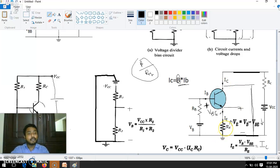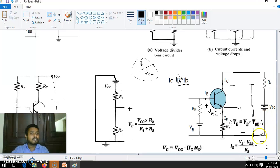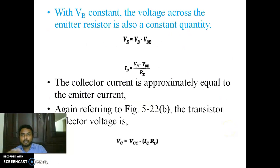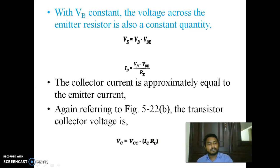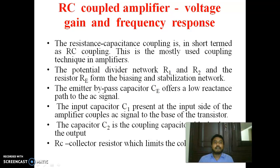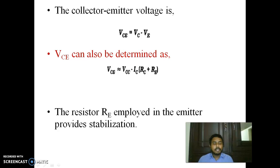So you understand the importance of RE as well — to stabilize this transistor bias, we are using RE, giving a negative feedback to the DC signal. When VE increases, we have to decrease VBE — that is a negative feedback. We are decreasing VBE with the help of IE·RE, or VE. I think we discussed almost all concepts — VC, VE, IE — and the role of RE in stabilization. Next we have to see RC coupled amplifier, which we can see in the next video. Thank you all.